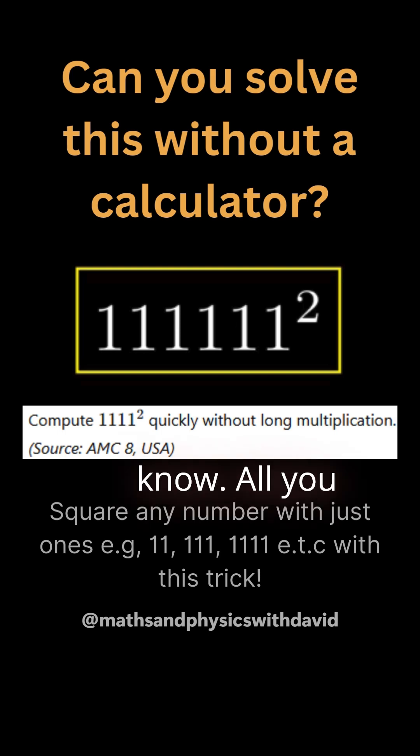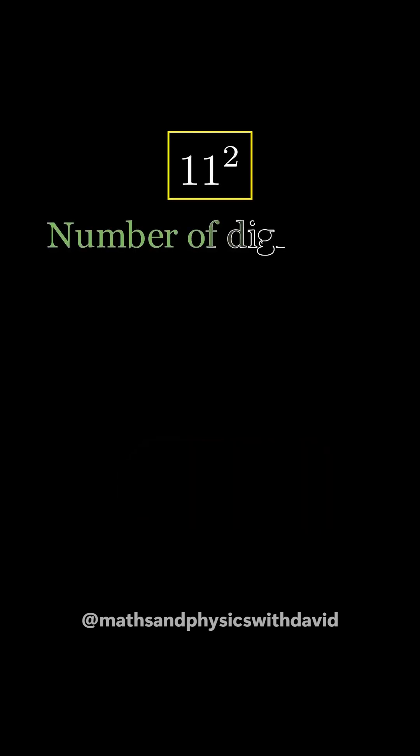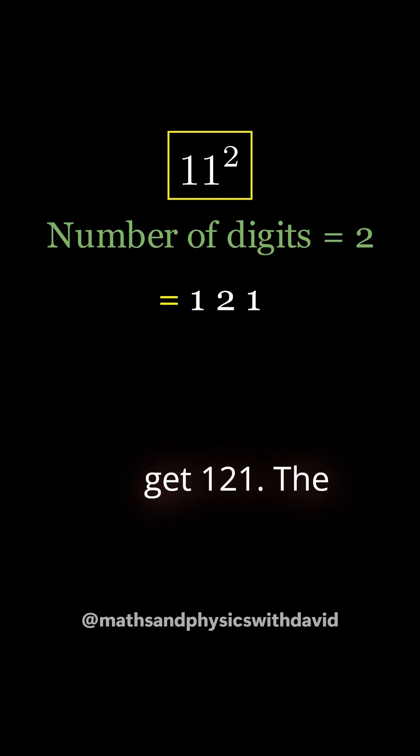Olympiad math trick - I bet you don't know. All you have to do is look and write the answer. Wait, let me show you the trick. For 11, there are two digits, so you get 121. The highest number is 2.